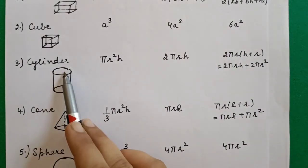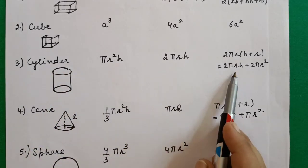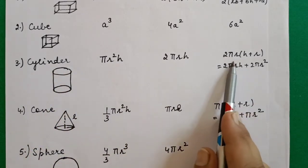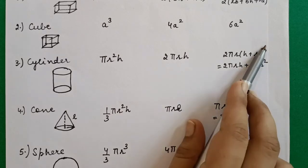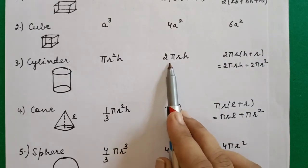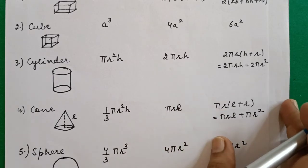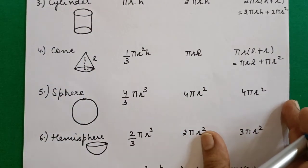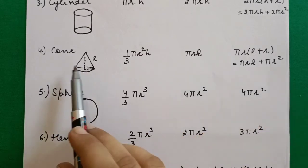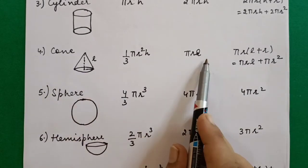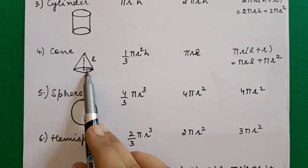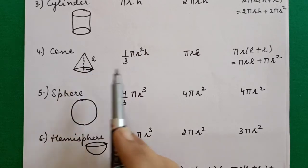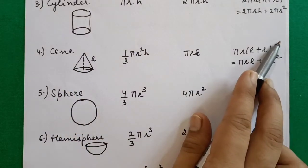For a cylinder, the top and bottom are circles of area πr² each. Subtracting 2πr² from the total surface area gives the curved surface area. Similarly, for a cone, subtract the bottom circle πr² from the total surface area to get the lateral surface area.